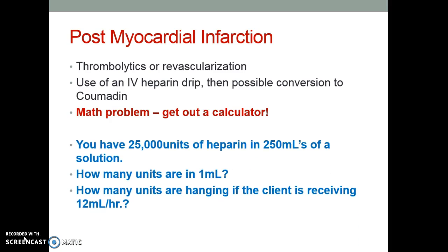Heparin makes great math problems. If you have 25,000 units of heparin in 250 milliliters of solution, first think about the concentration — how many units per milliliter? Once you know that, you can figure out how many units are infusing. To determine units per milliliter: 25,000 divided by 250 equals 100 units per milliliter. Then, if the client is receiving 12 milliliters per hour, multiply 12 mL/hr by 100 units/mL to get 1,200 units per hour.